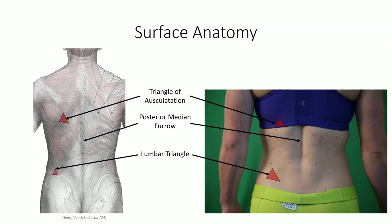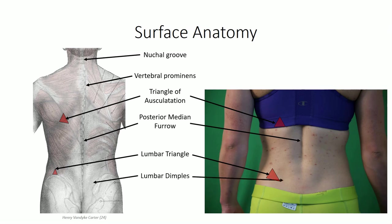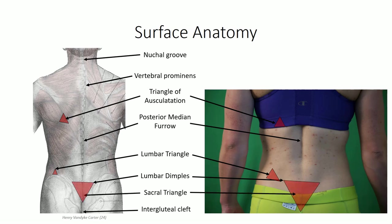Other landmarks include bony protuberances. The vertebral prominence marks the spinous process for C7, allowing a starting reference point from which to count individual vertebrae. Above this point, the spinous processes become hidden superficially within the nuchal groove. The lumbar dimples mark the site for the posterior superior iliac spines. Combined with the intergluteal cleft, these landmarks form the sacral triangle, which is important for landmarking the sacral hiatus.